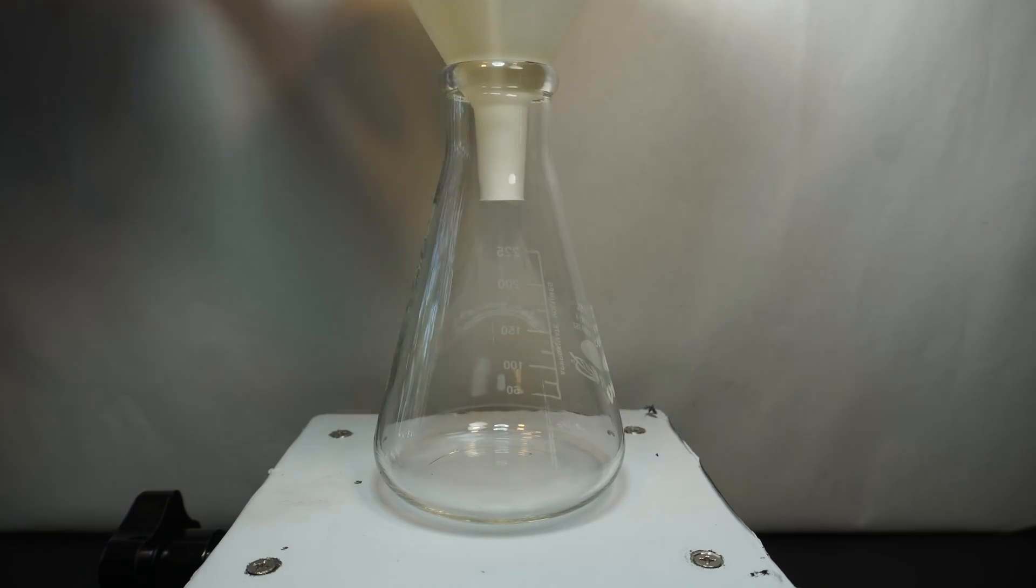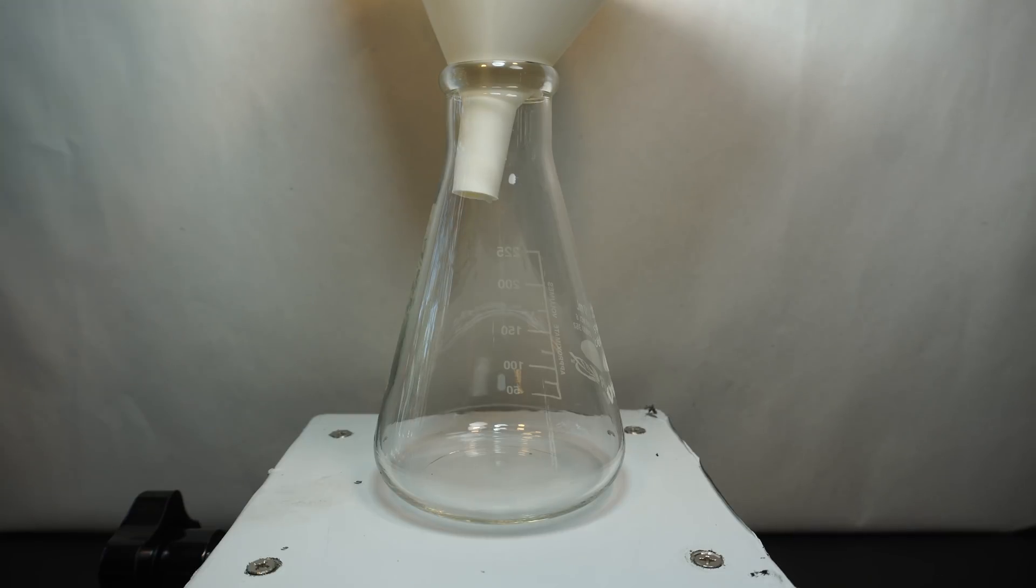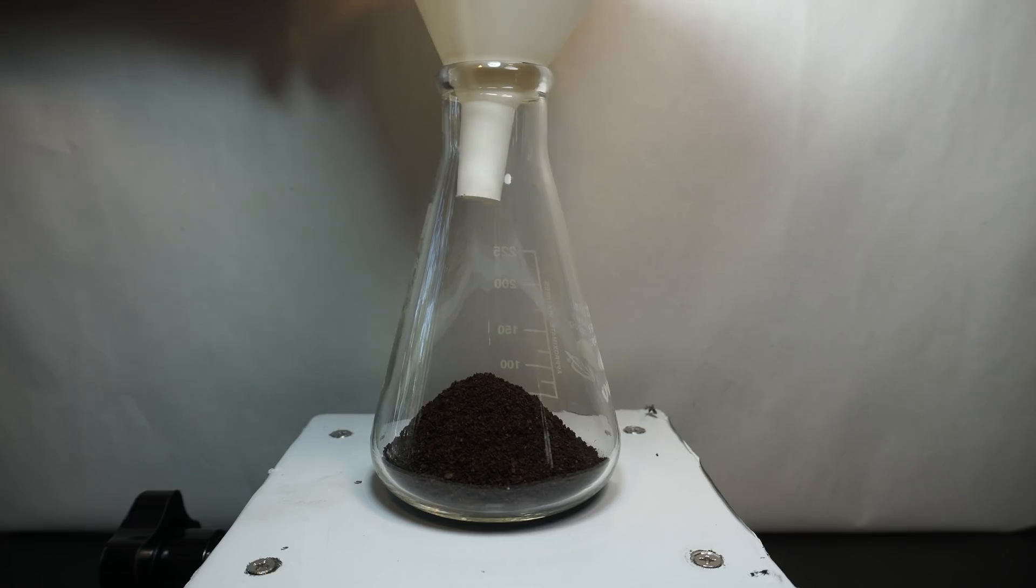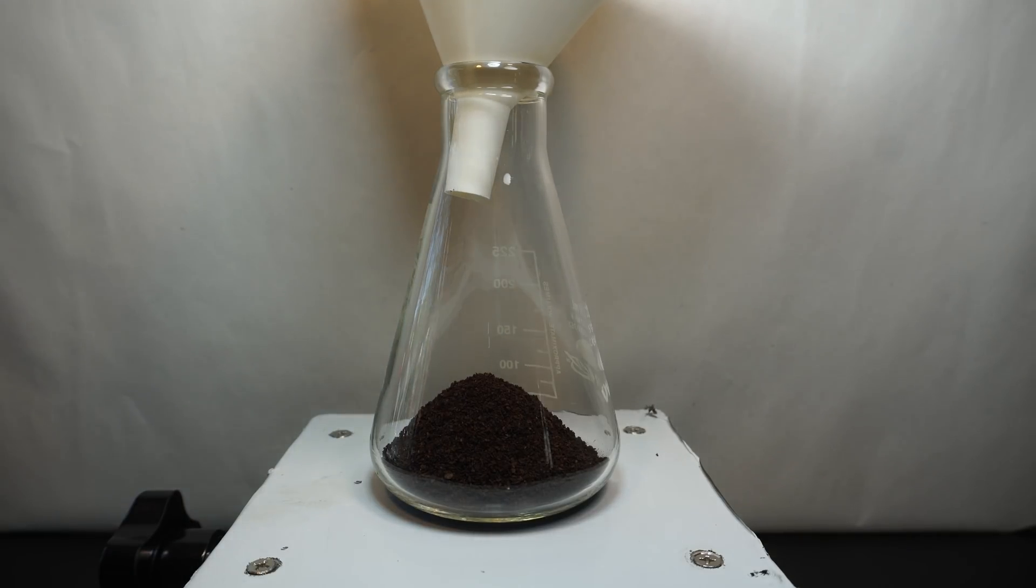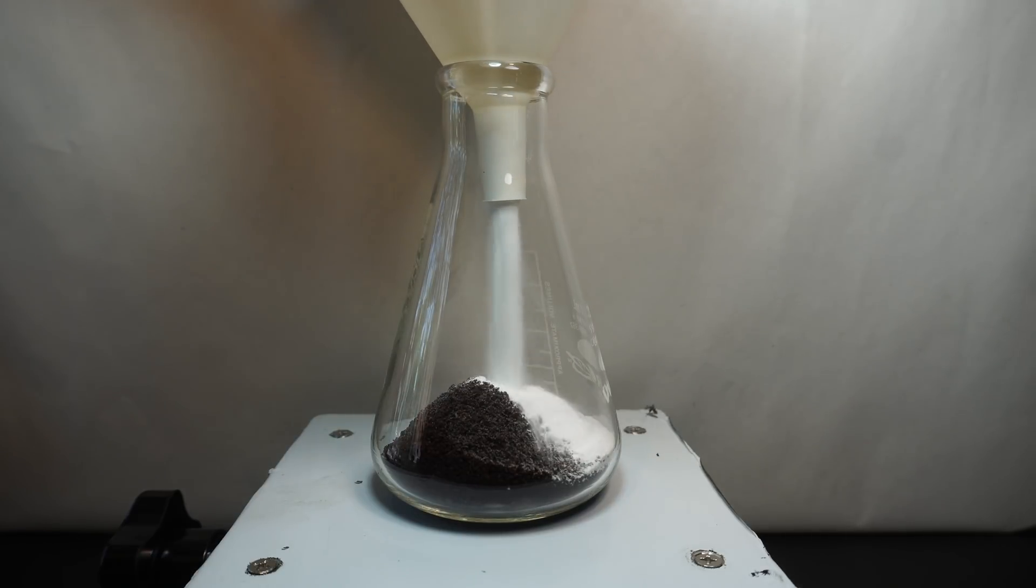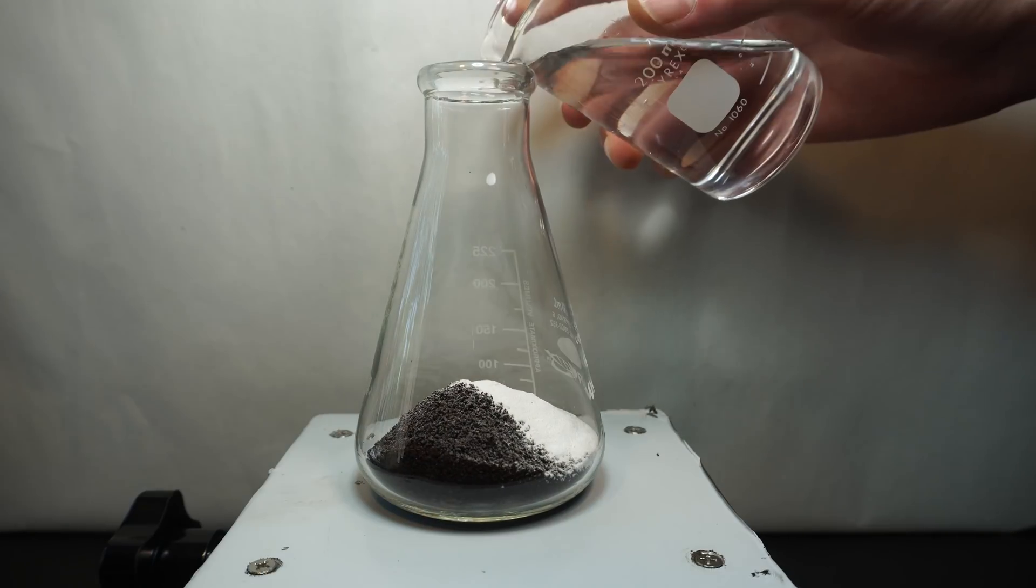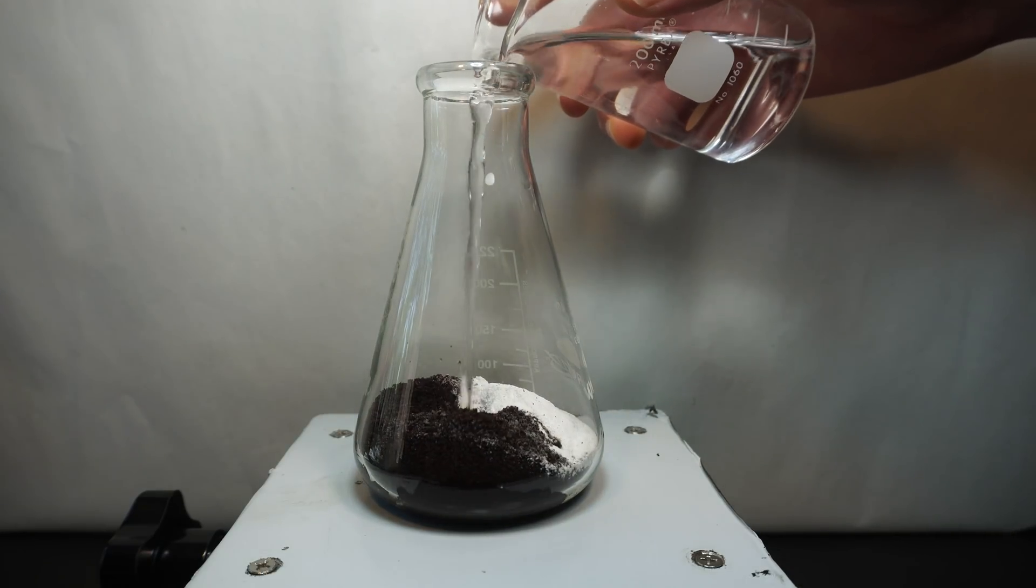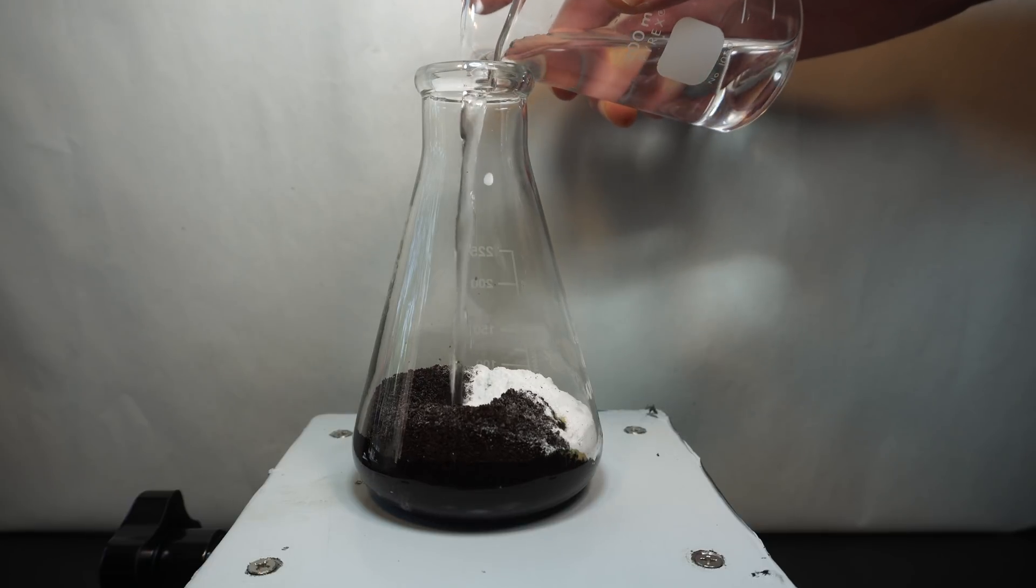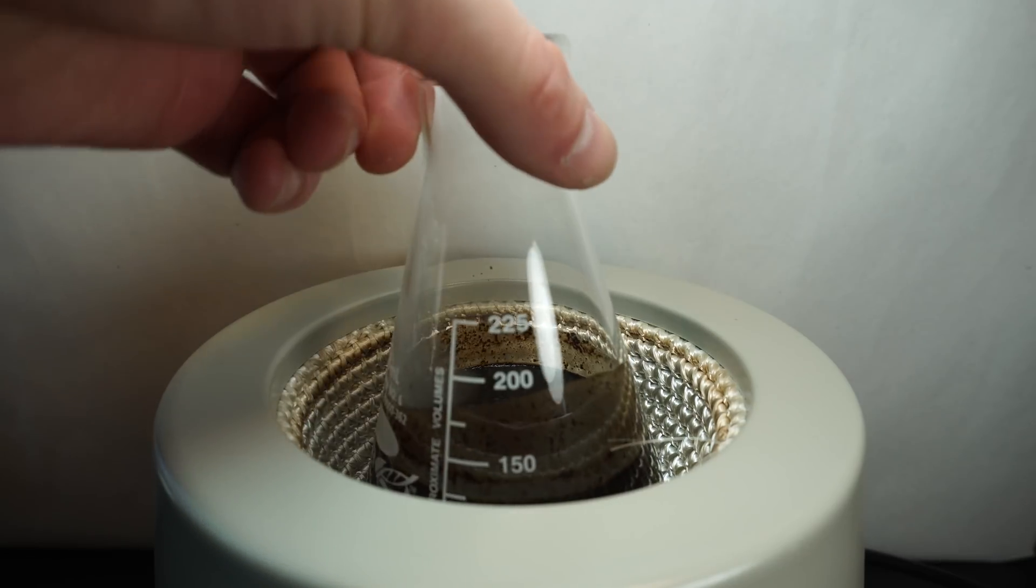First we have to make the coffee. In an Erlenmeyer flask I add 20 grams of Death Wish coffee, followed by 7.2 grams of sodium carbonate. The sodium carbonate will react with the tannins in the coffee to make them more water soluble. Then I add 100 milliliters of distilled water and bring the coffee to boil.